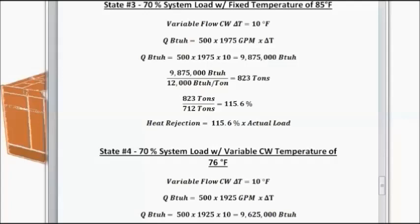And we'll also see a change in percent heat rejection. And this is due to a more efficient operation of the variable speed chiller that we are simulating. It has little to do, though, with the reduced flow. 823 tons now is the calculated heat rejection load. And if we compare that to the actual cooling load of 712 tons, the heat rejection is about 115.6% of the actual load.